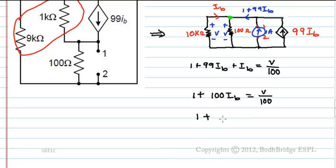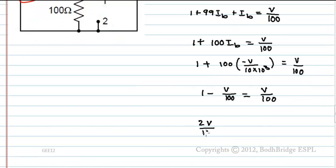1 plus 100 into minus V by 10 into 10k equals V by 100. 1 minus V by 100 equals V by 100. 2V by 100 equals 1. V equals 50 volts.